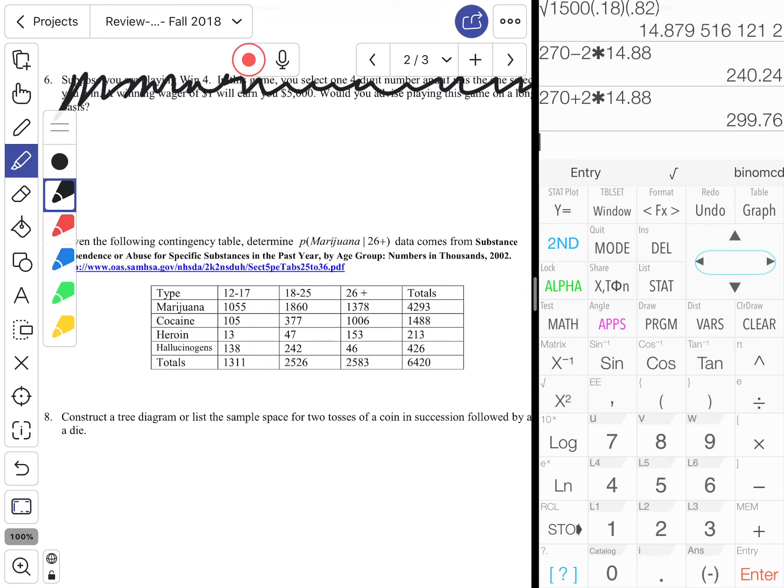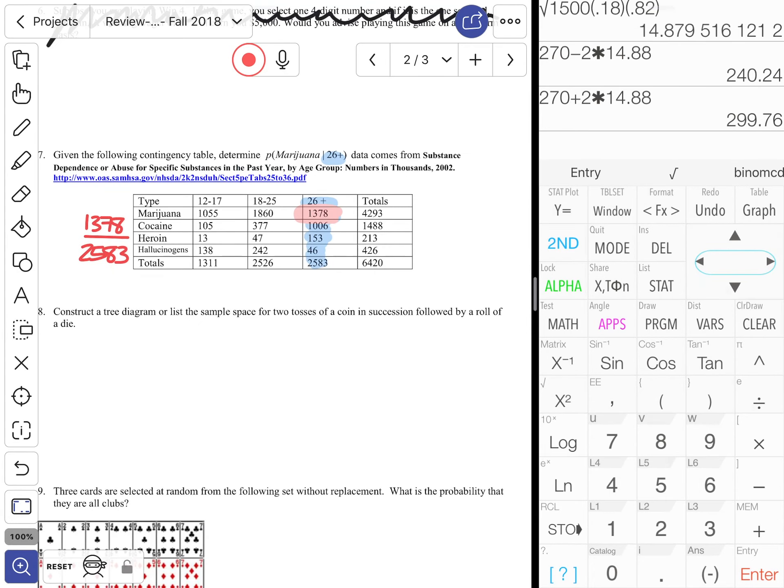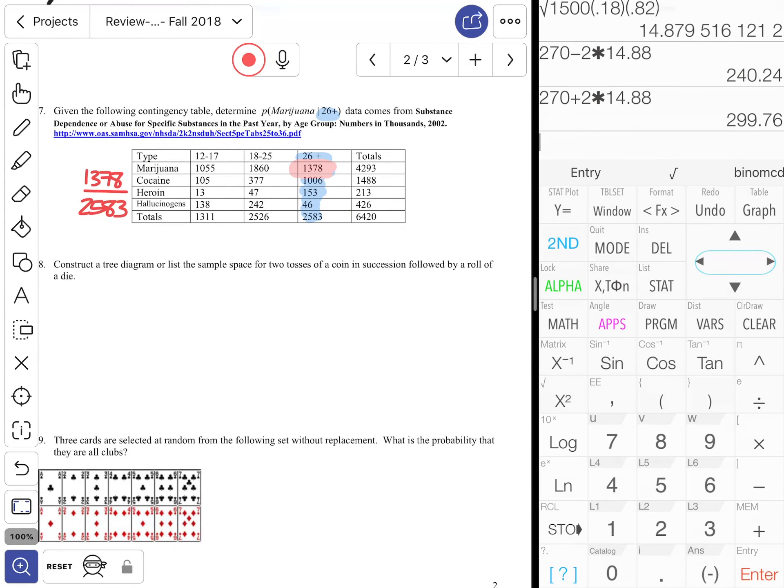Number seven: we want to know the probability of a person being in the marijuana category given that they're in the 26 or older category. So our given is 26 or older, so that puts us in this column of the table, and all I care about are the marijuana users in that column. So we're looking at 1378 out of 2583. And that's it. Those contingency table questions are the easiest ones - to come up with an answer they're also very unforgiving if you screw it up, so take your time and be careful.